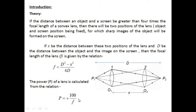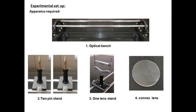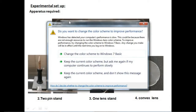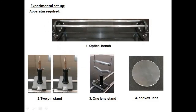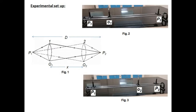So here is the experimental setup. The apparatus required for the experiment is: one optical bench, two pin stands — out of which one is used as the object pin and the other as the image pin — one lens stand, and one convex lens. Figure 1 represents the ray diagram with P1 as the object pin and P2 as the image pin, where O1 is the first position of the lens and O2 is the second position.